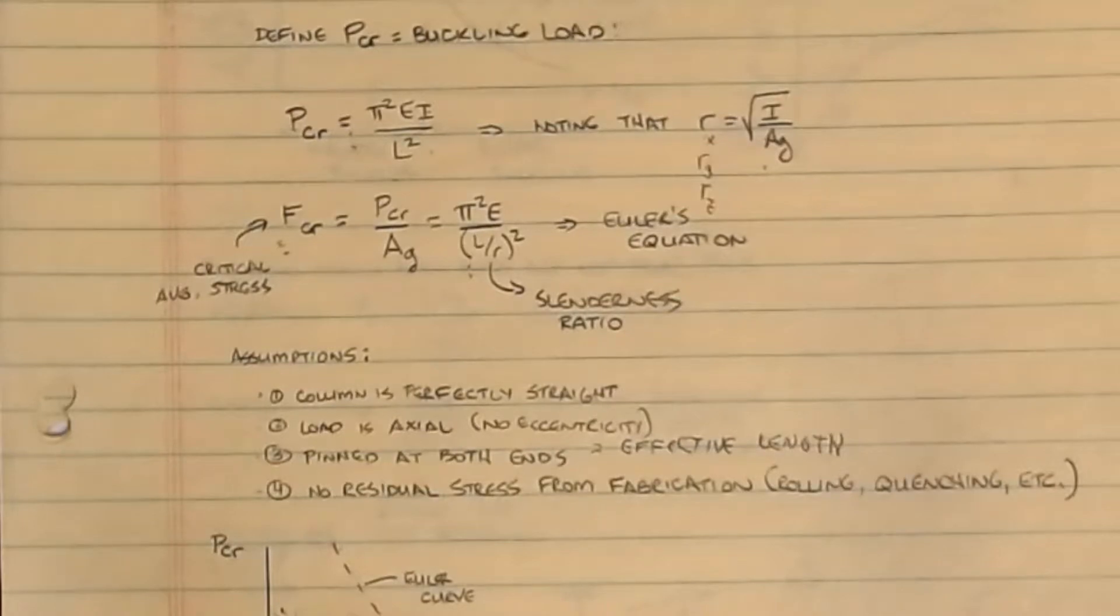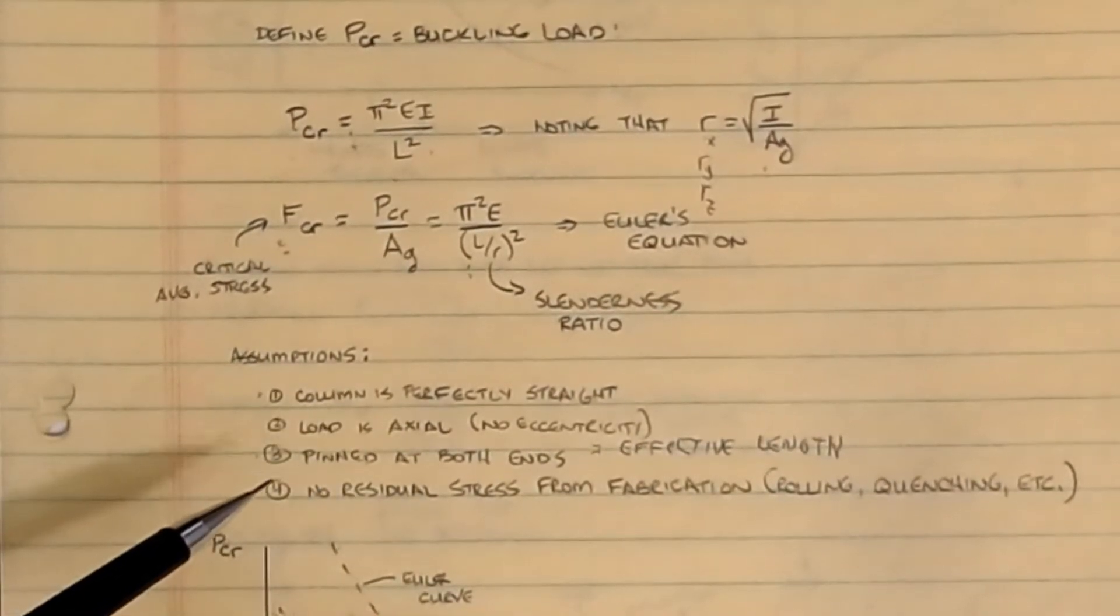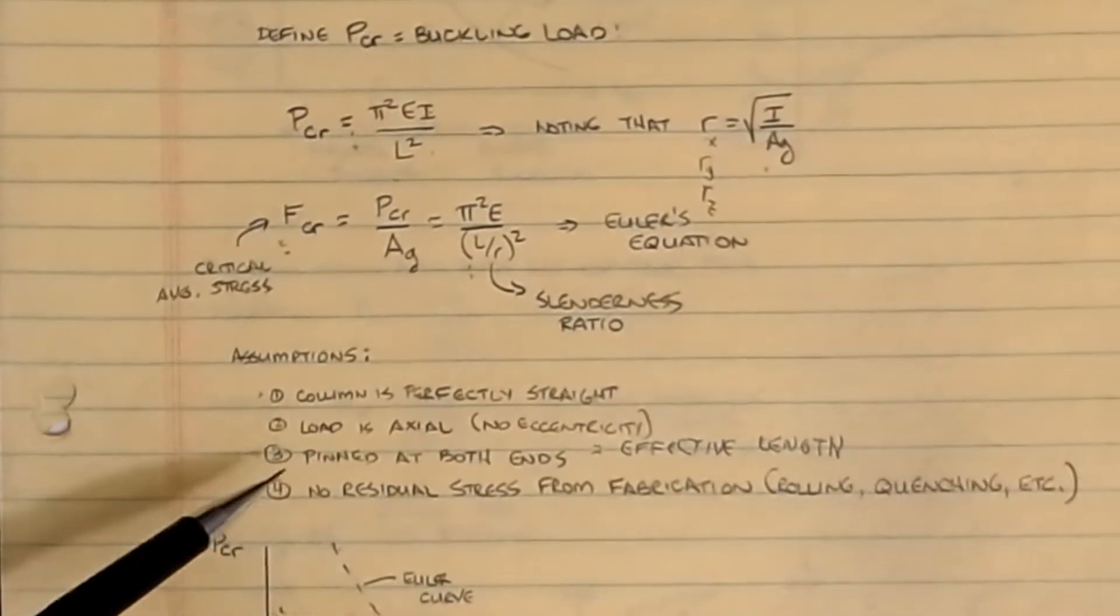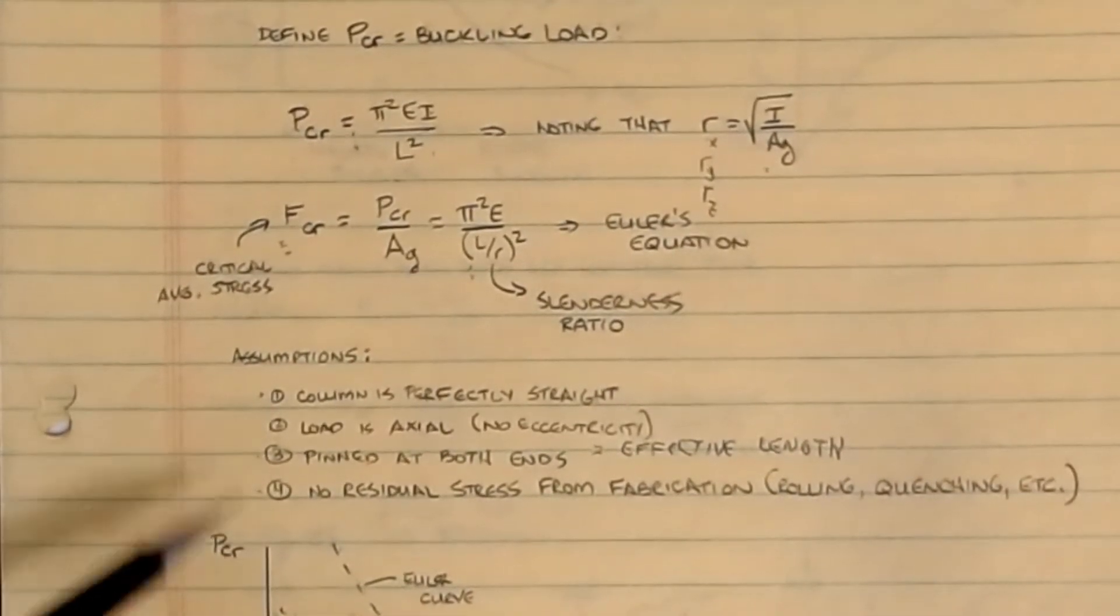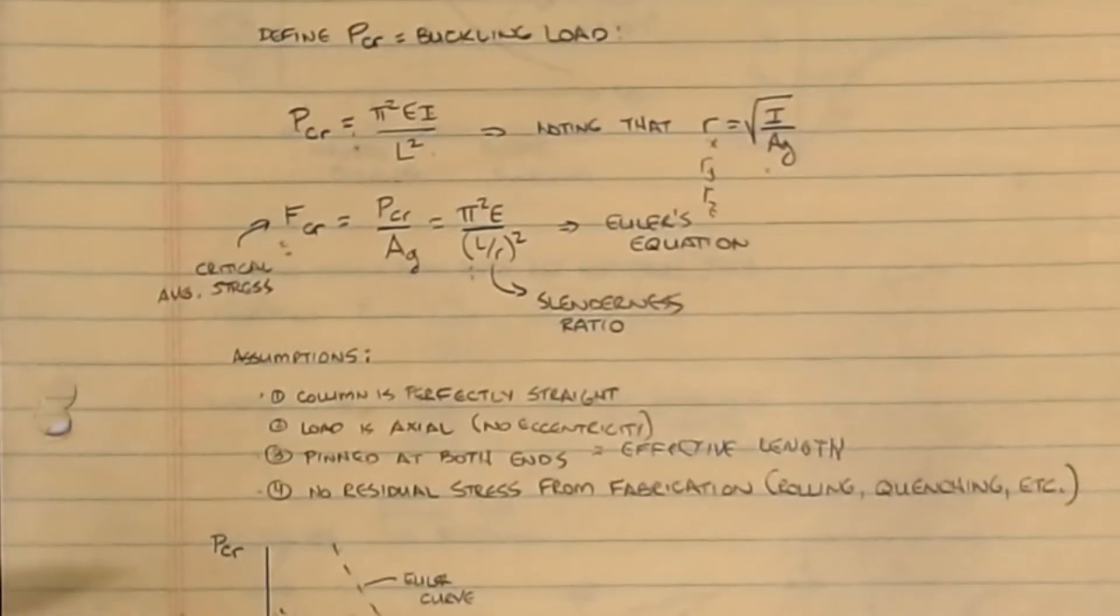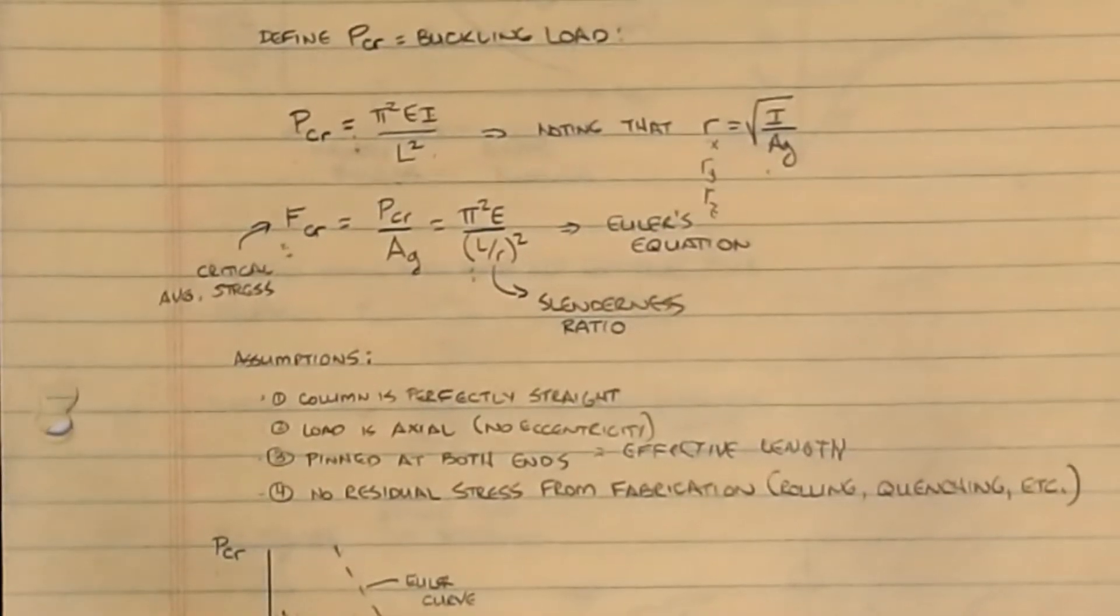But then towards the end we mentioned some assumptions that had to be made in his derivation. Those assumptions were that the column is perfectly straight, the load is axial, it's pinned at both ends, and that there was no residual stress from fabrication. In reality we also said that none of these are true. So we have to take into account some corrections to the Euler equation before we can actually put it to work for us using the AISC methodology. And so that's the purpose of this video. So without further ado let's get started.